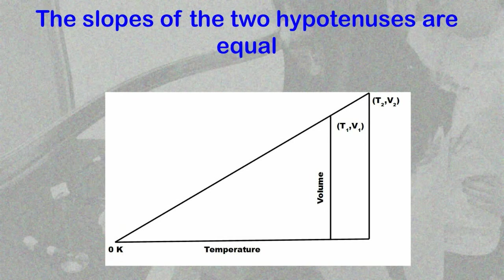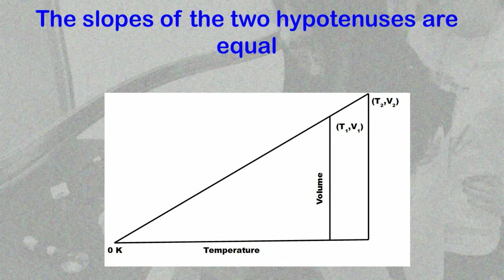Therefore, the two lines called hypotenuses have exactly the same slope. The slope of these two lines, m, is equal to the volume divided by the absolute temperature. This is the expression of Charles' Law, after the great chemist of France, Jacques Charles.